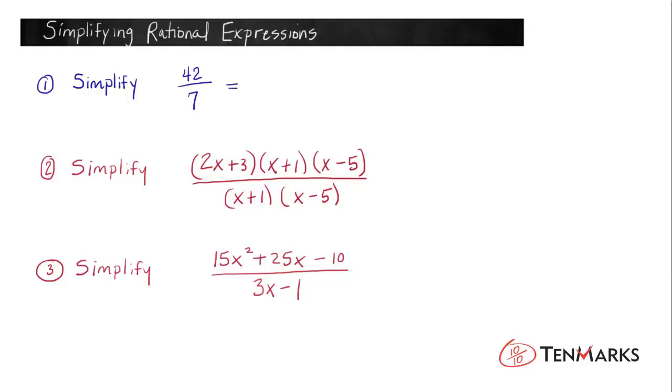The prime factorization of 42 is going to be 2 times 3 times 7. Two 3's are 6, six 7's are 42. And we're going to divide that by 7. So all we've done so far is rewritten the 42 in terms of its factors. The reason that 7 divided into 42 gives us 6 is because 7 is a factor of 42.